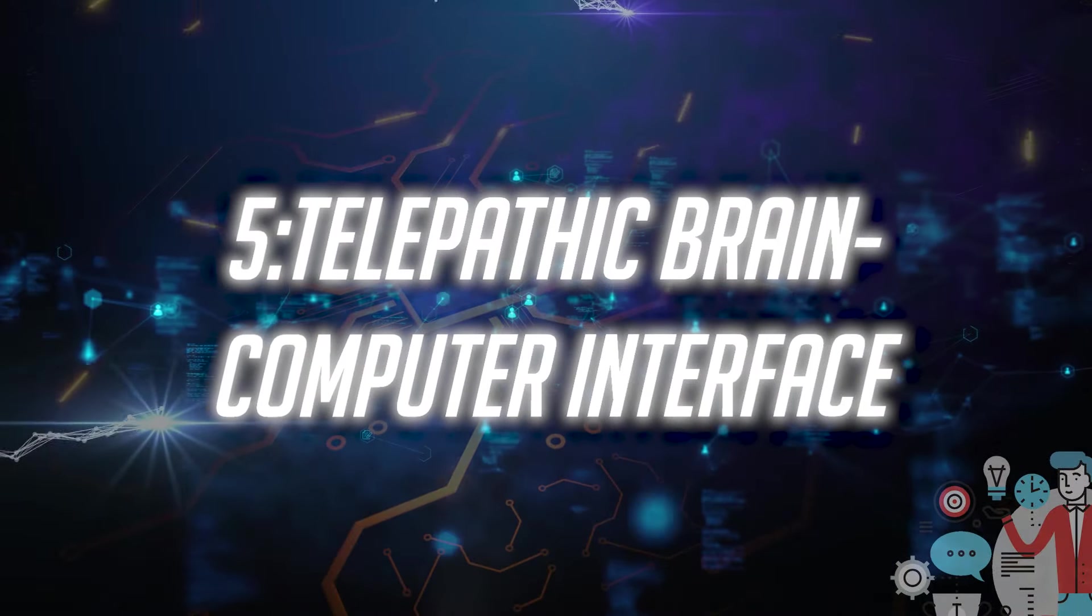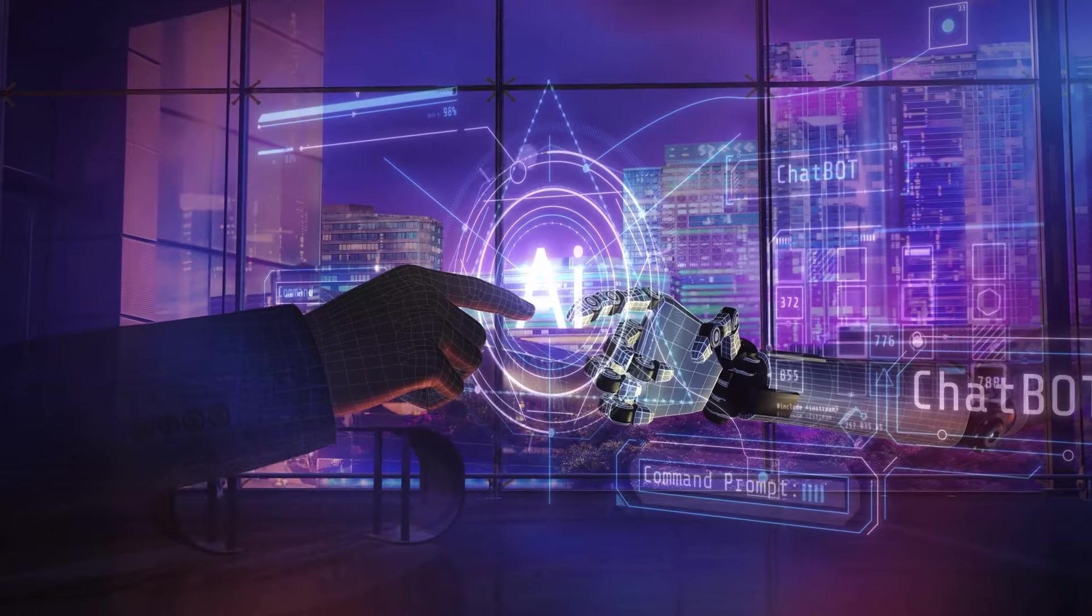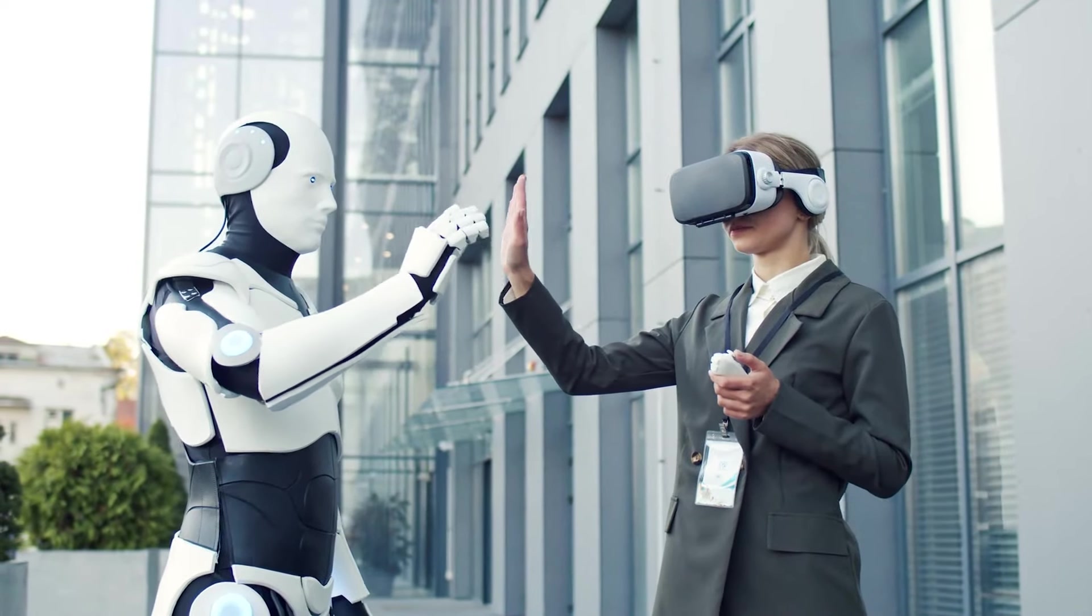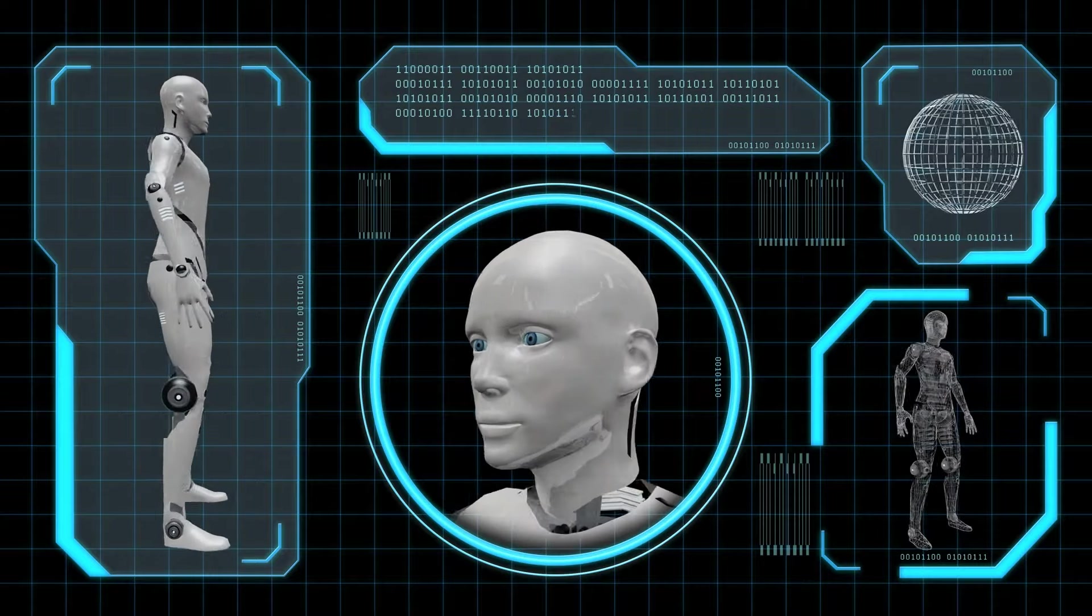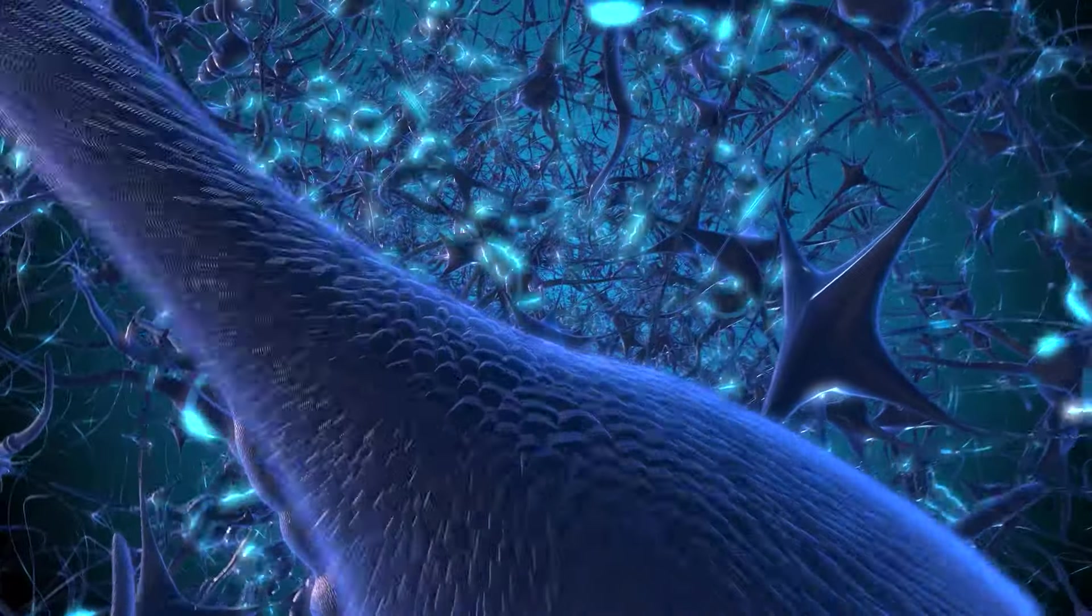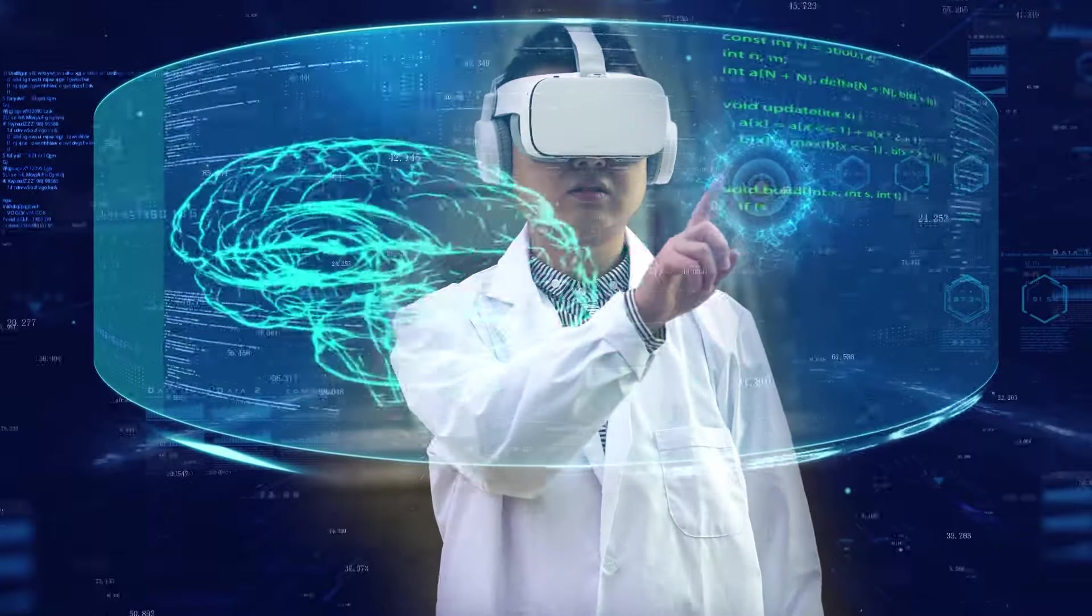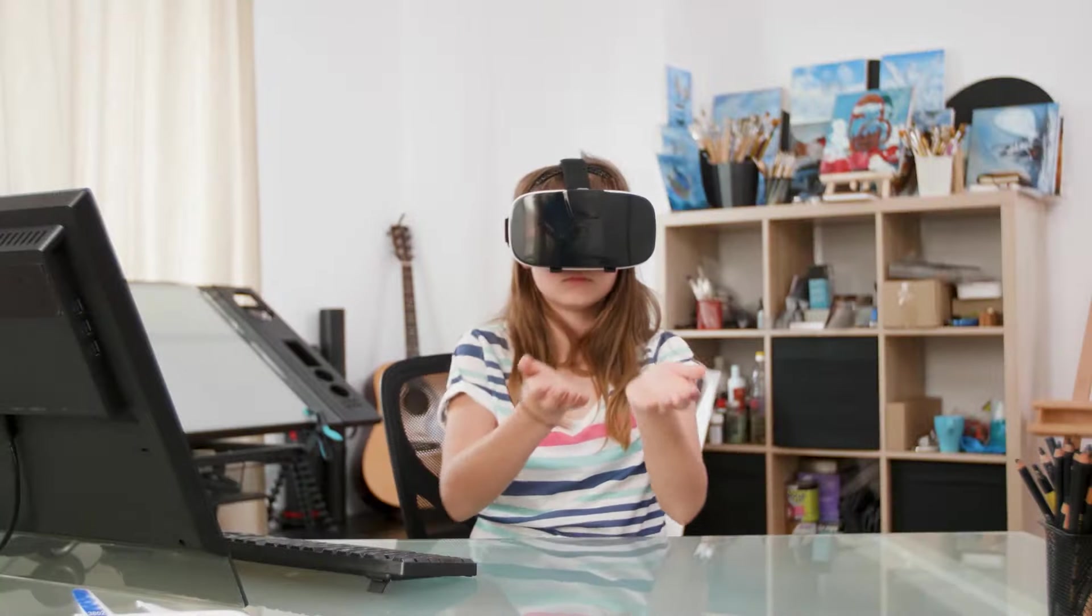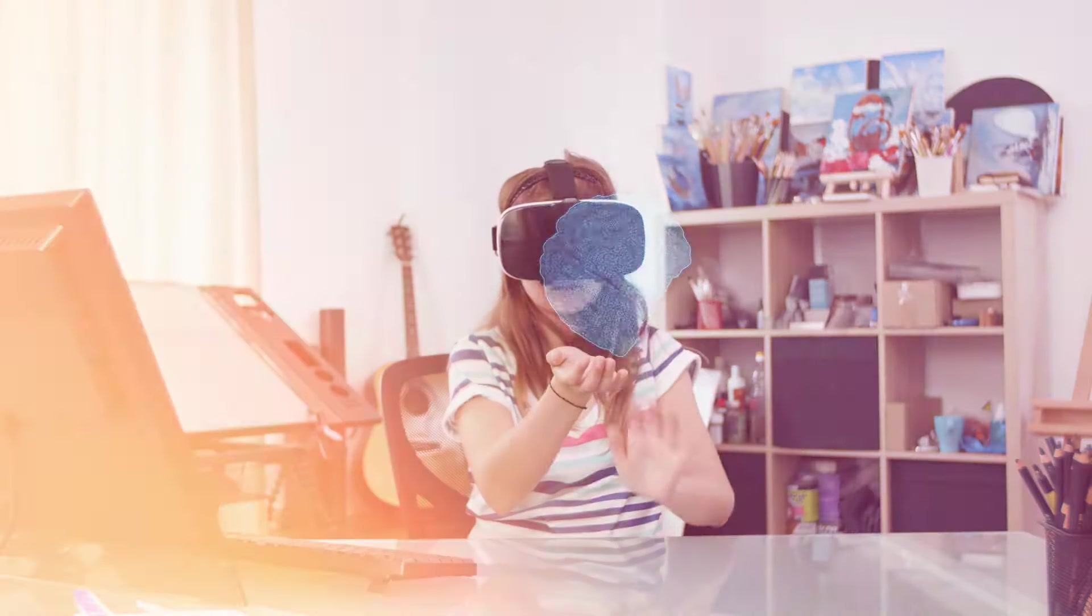Number five, telepathic brain-computer interface. Soon, AI predictions hint at an astonishing evolution in human-machine interaction, giving rise to telepathic brain-computer interfaces, BCIs. Imagine a world where thoughts seamlessly translate into commands, eliminating the need for physical touch or voice commands. This breakthrough technology promises a new era of convenience and efficiency, where the mind becomes the ultimate interface. The telepathic BCI works by decoding neural signals from the brain, allowing users to communicate with computers or devices effortlessly. No more typing or clicking, just the power of your thoughts shaping the digital world around you. This innovation holds immense potential for individuals with mobility challenges, providing them with a newfound independence and freedom.